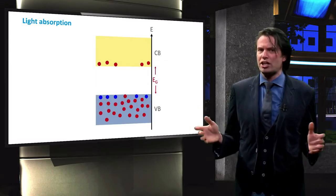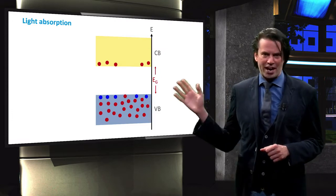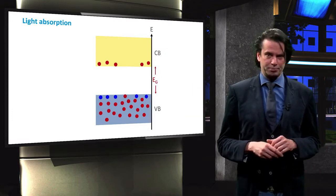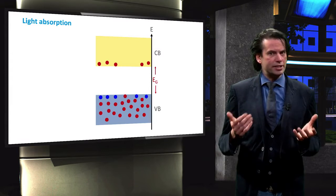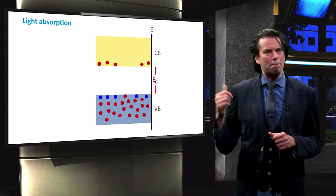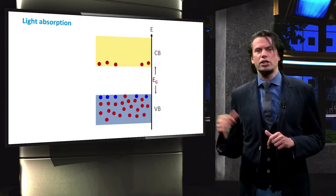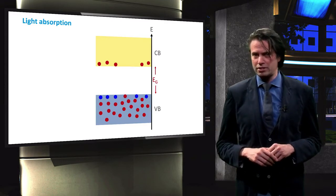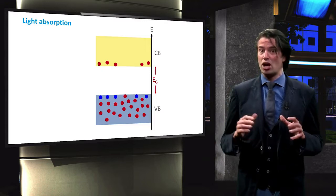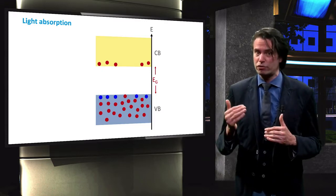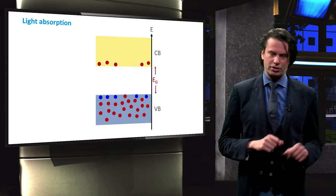Any single junction solar cell can only utilize a fraction of the incident energy. To visualize this, we take a look at the band diagram of a semiconductor material. The blue box represents the valence band. The valence band contains the low energy of the bound valence electrons in the semiconductor material.